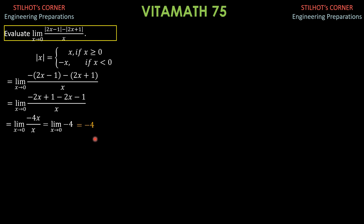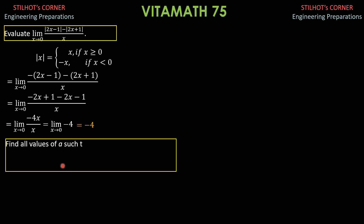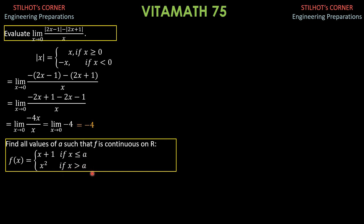For the second problem, find all values of A such that f is continuous on ℝ. f(x) is defined piecewise as x plus 1 if x is less than or equal to A, and x squared if x is greater than A. For the function to be continuous on ℝ, the limit must exist as x approaches A, the function value must exist, and the limit and function value must be equal.